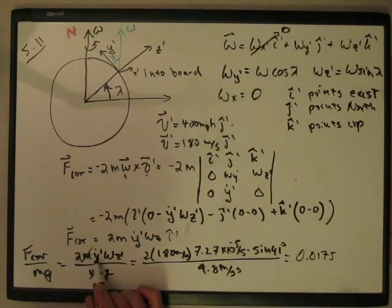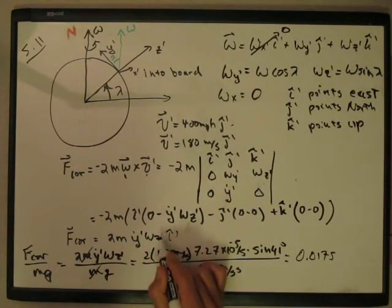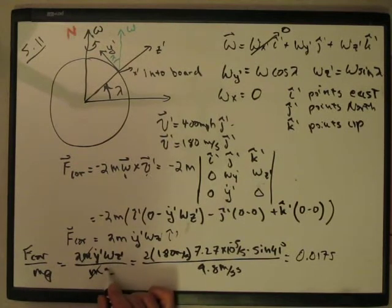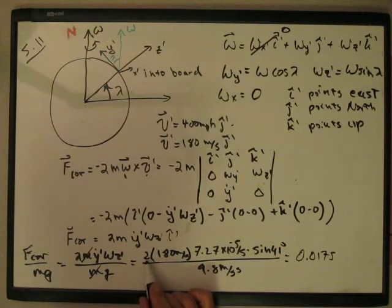And so it's just 2m y dot prime omega z prime. It's just the magnitude of this guy over the magnitude of the weight, which is mg. The m's cancel. And then I can just plug in for all these guys.